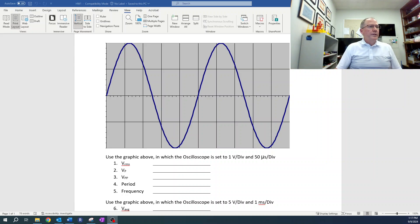All right, so let me go over this homework. Here's what we're given - we're given this graphic. For the first part, it's set to one volt per division for the voltage or the amplitude and then 50 microseconds per division for the time.